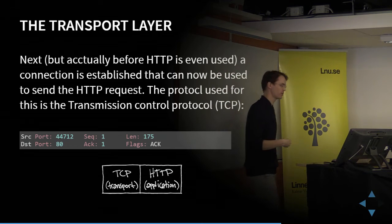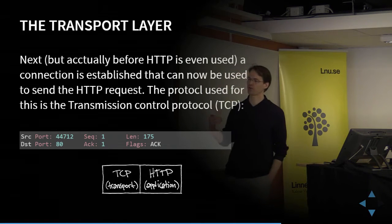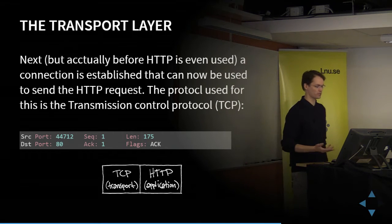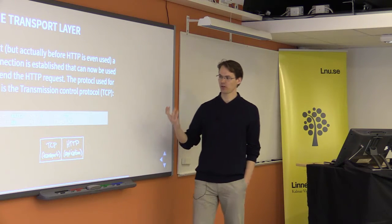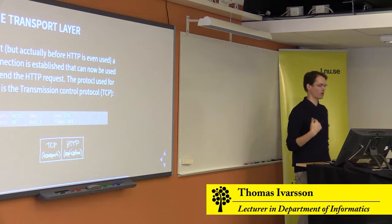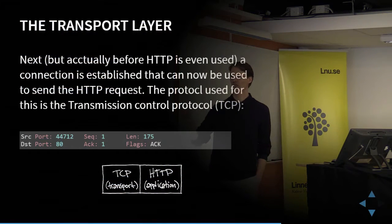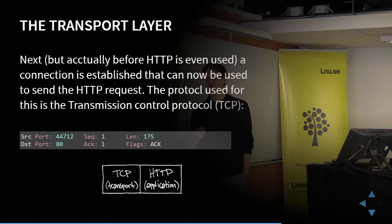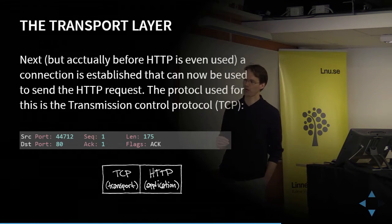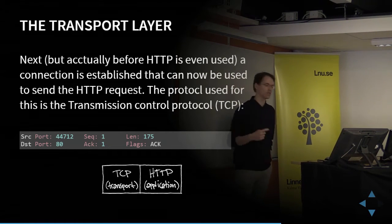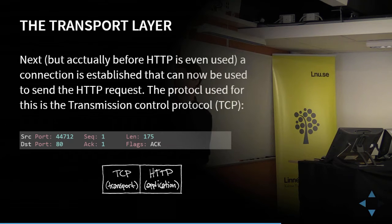The sequence number tells the server how much data I have transferred. Since we've just established the connection, the sequence number is 1. The acknowledgement number is also 1, instructing the server what data I've received — since we've just connected, we haven't received any data, so we tell the server we're ready for its first byte. The message length here is 175 bytes, so the next sequence number will be 176.